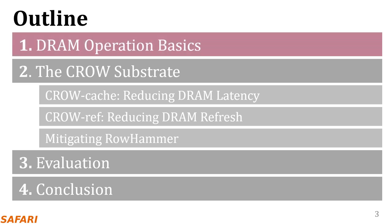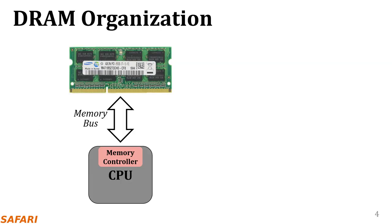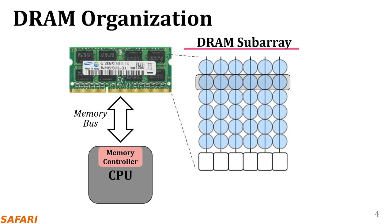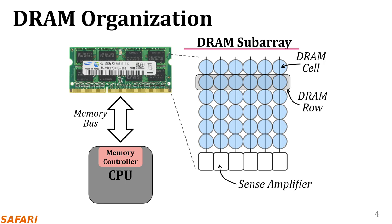This is the outline of today's talk. I will start with describing the basics of DRAM. Here I show a typical system with a CPU and a DRAM module that has several DRAM chips. Inside the DRAM chip, there are multiple subarrays which contain many DRAM cells organized as a two-dimensional array. A DRAM cell stores a single bit of information as electrical charge. In a subarray, the cells are vertically connected to sense amplifiers, which can read the data from the cells and update it if needed. A row of DRAM cells is called a DRAM row.